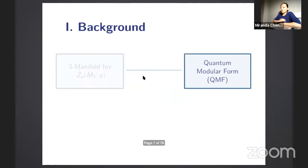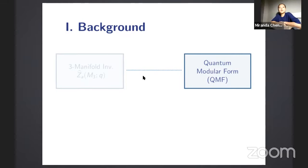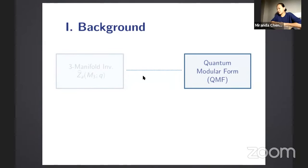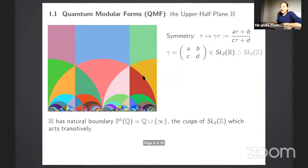Let's start by discussing what quantum modular forms are. In one sentence, these are functions defined on the rationals which have some type of modular-like properties. That's one sentence — but let's actually discuss what they are in detail.